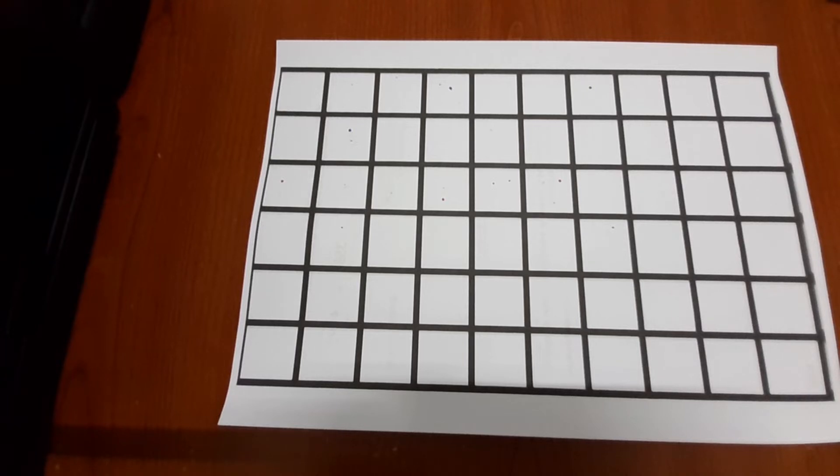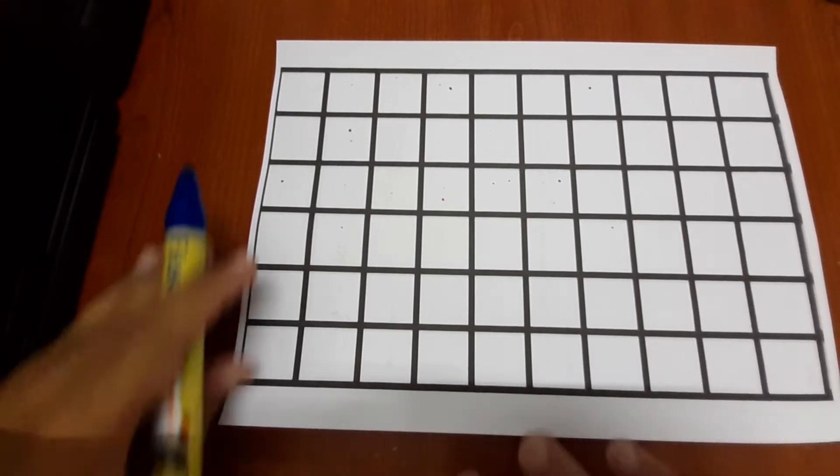Alright, so how do we get the unknown? So 6 plus 2, jadi 6 tambah 2 akan dapat 8. Jadi 8 adalah unknown, ataupun anu, nilai yang kita cari tadi, nilai yang kita tidak tahu tapi kita boleh cari.